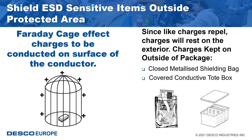ESD protective products that provide a Faraday cage or shielding include ESD metal-in bags and metal-out bags, impregnated corrugated conductive boxes with a buried conductive layer, and other material handling containers.